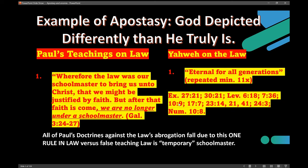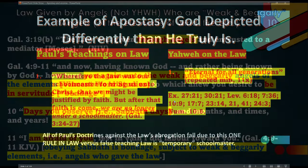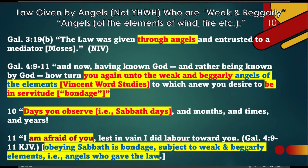So you've got apostasy here because you have a clear statement of God — unequivocal — it's eternal for all generations. Then on the left you have Paul saying the law was our schoolmaster to bring us unto Christ, but after faith has come, we are no longer under the schoolmaster. And in Galatians 3:19, he says the law was given by angels through a mediator. So far you don't know, just reading that, was that going to be a bad thing? Yes, it's a very bad thing.